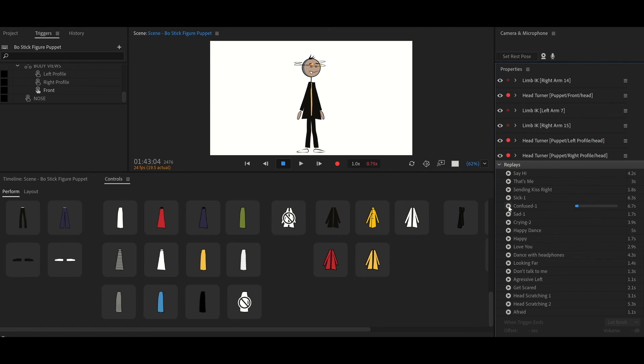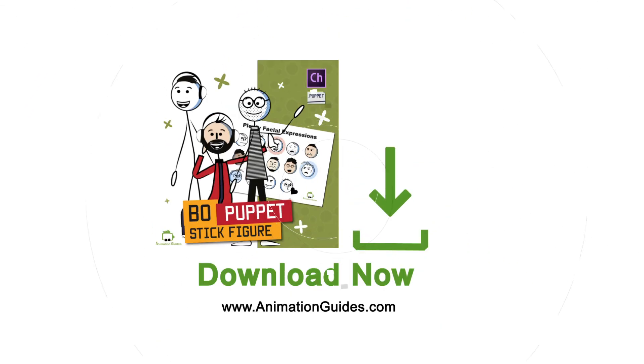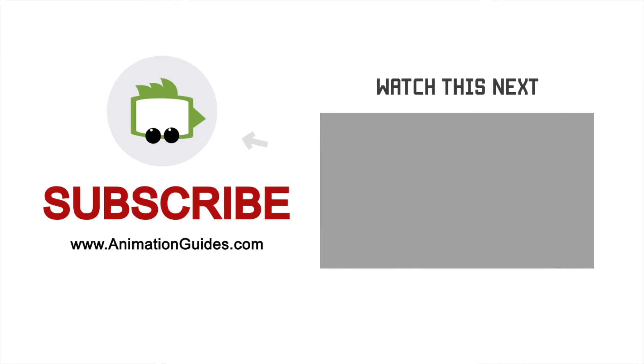Just add me to your presentations, explainer videos, or any other projects, and watch them come to life. Download Bo Stick Figure Puppet now from animationguides.com. Thank you for watching, and don't forget to subscribe to our channel.